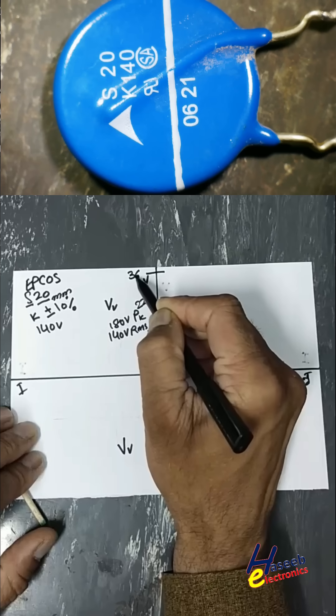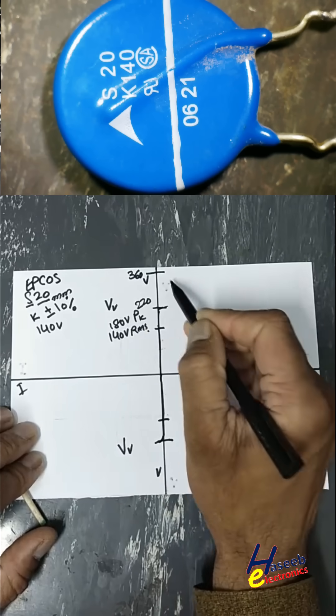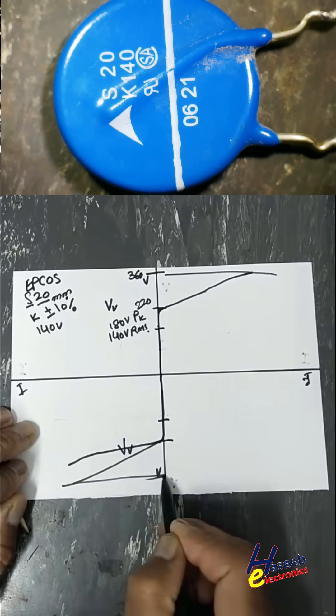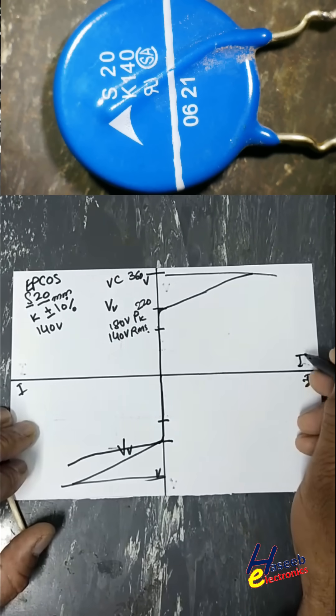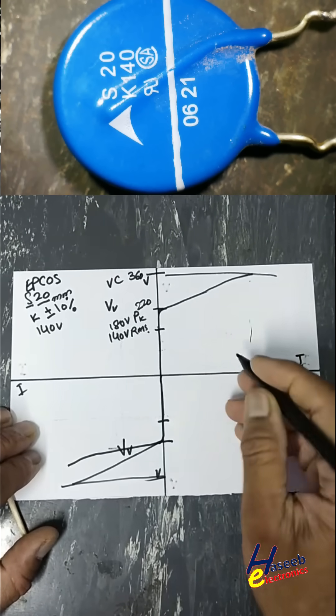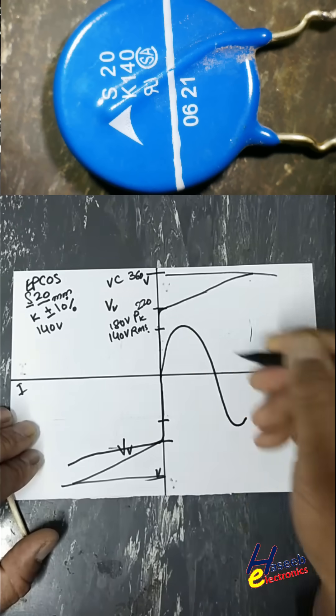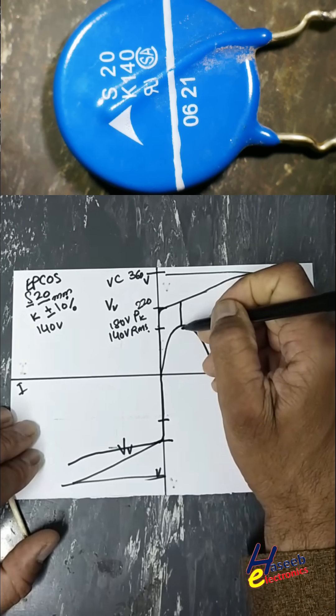From 220 volts until 360 volts, these are the clamping voltages, VC. At this time, a high amount of current will flow from this device for any pulse above this level.